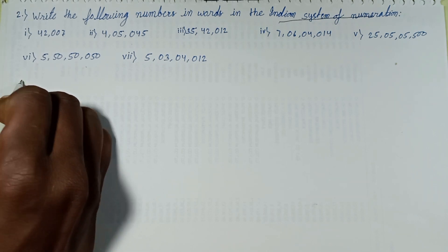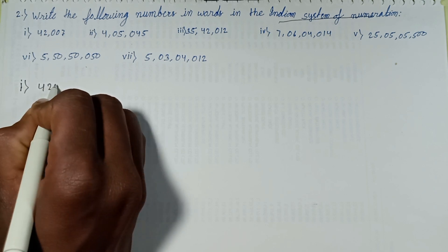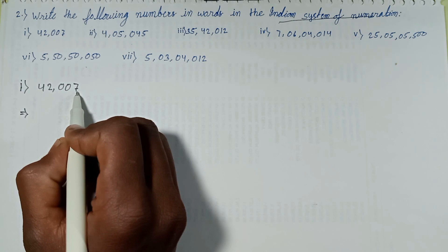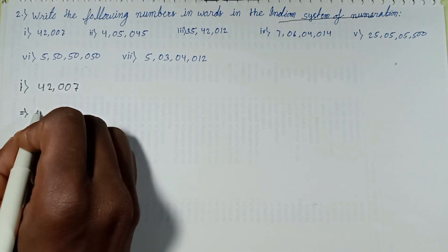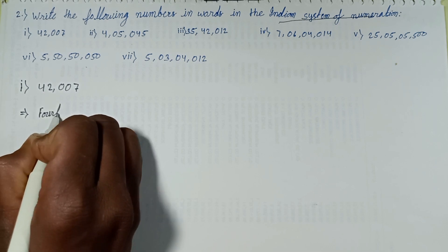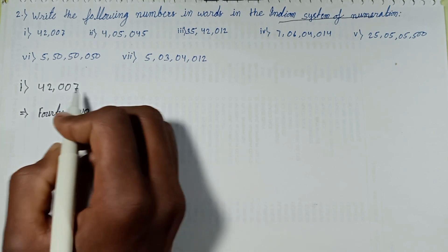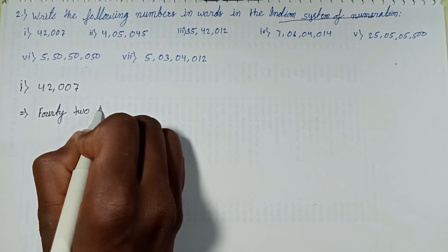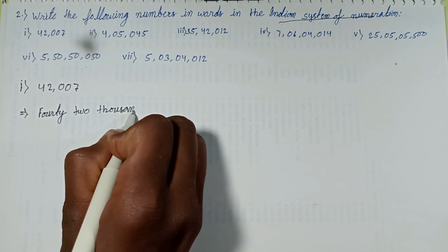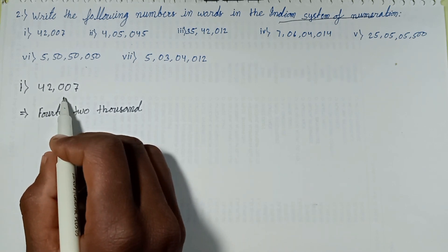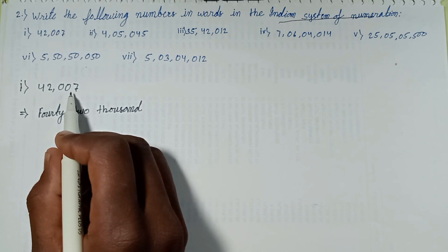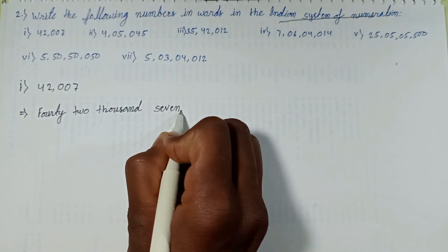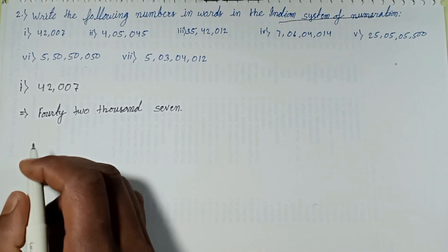First question: given number is 42,007. Count from the most right side — ones, tens, hundreds, thousands, ten thousands. So we have forty-two thousand in the thousands period, and seven in the ones place (zero, zero, seven). Answer: Forty-two thousand seven.